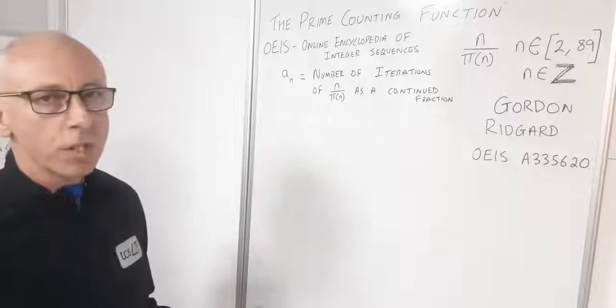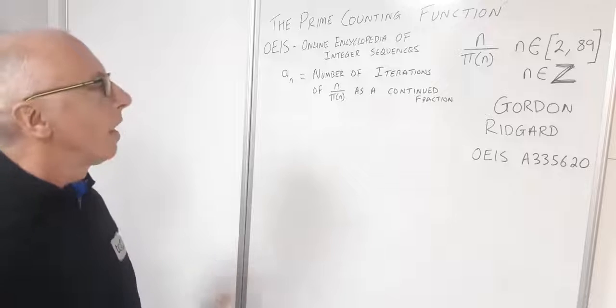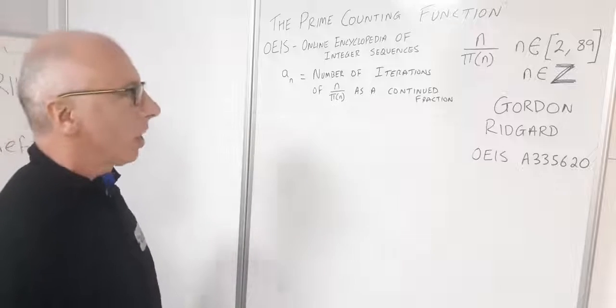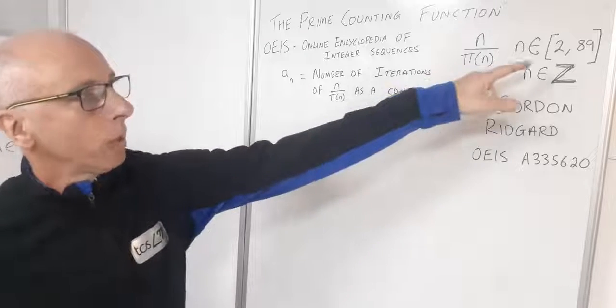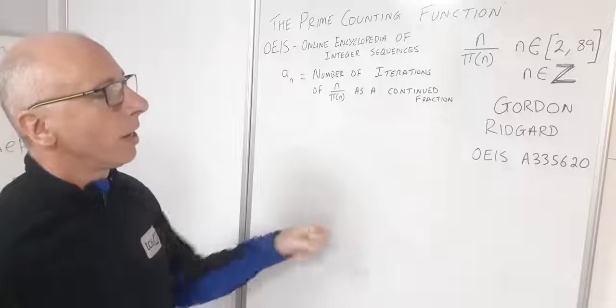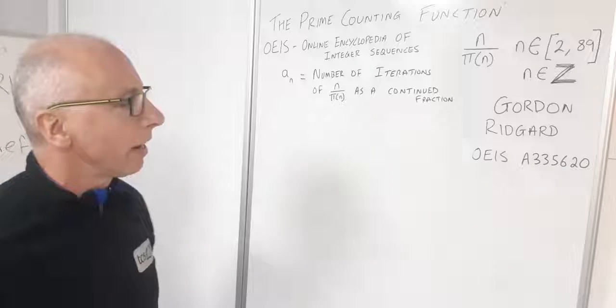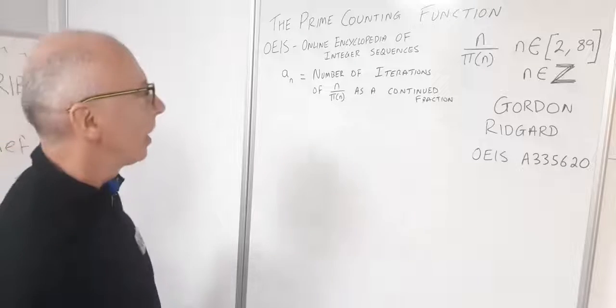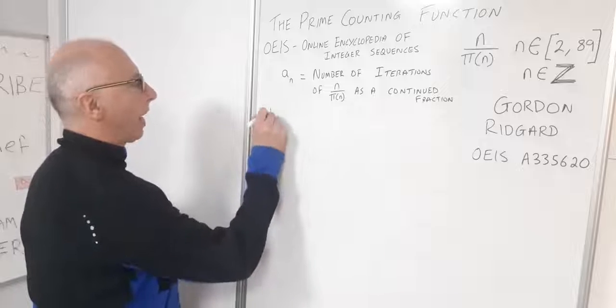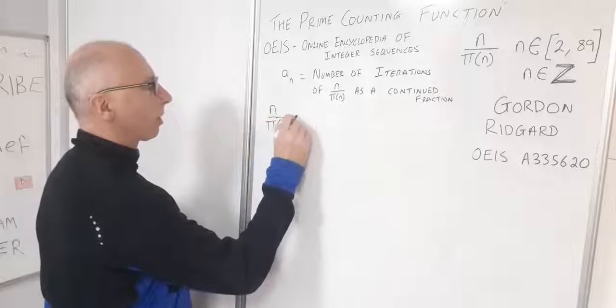You will see the relevance to the prime counting function in previous videos I've done where this is linked. So we pick any number between 2 and 89 that's an integer. On his entry he's used number 21, so we won't use that here. We'll look at say number 50.